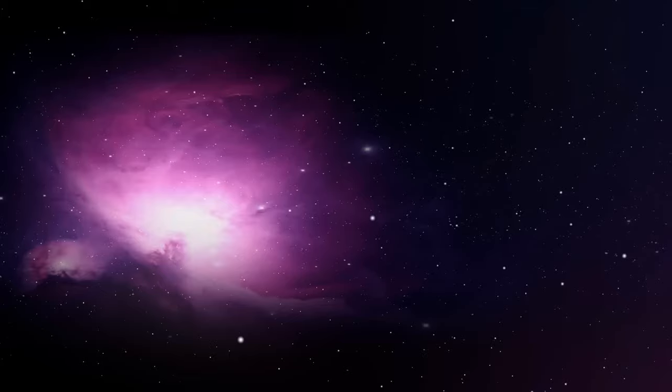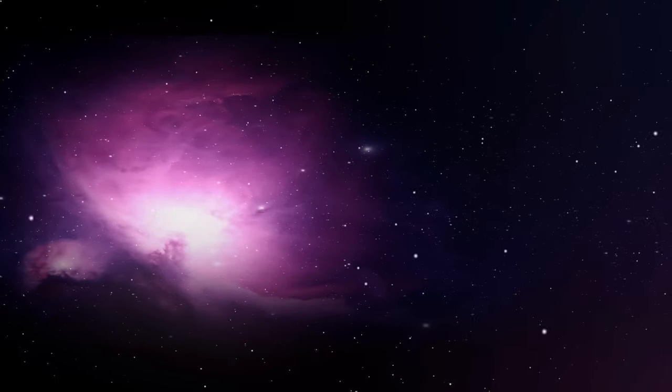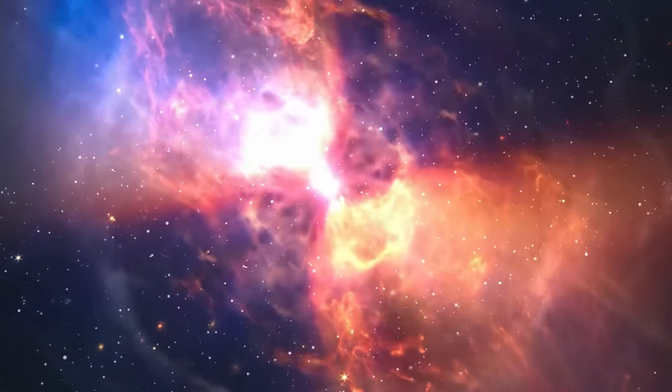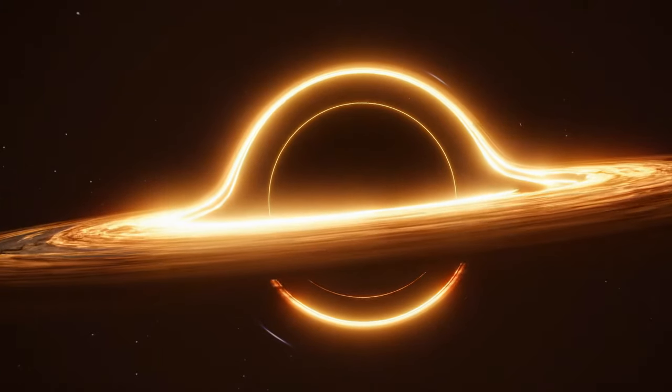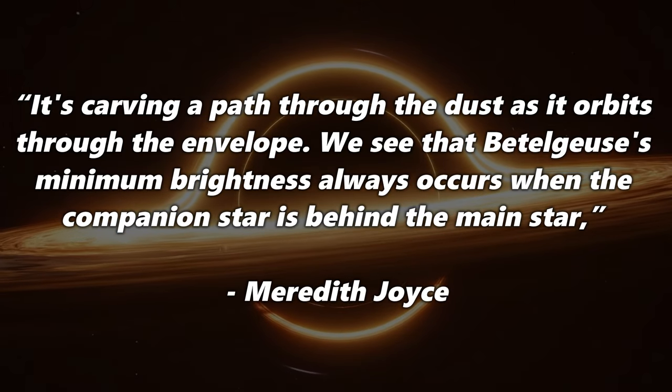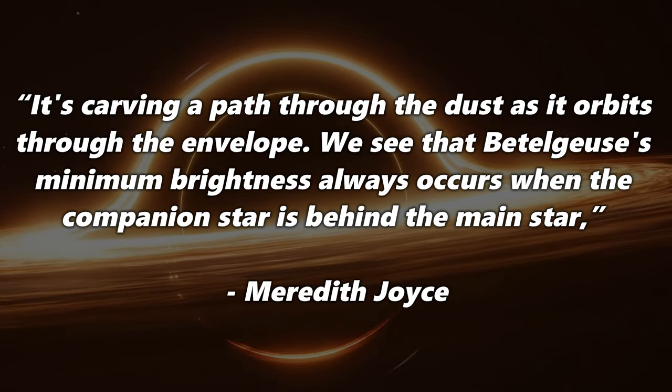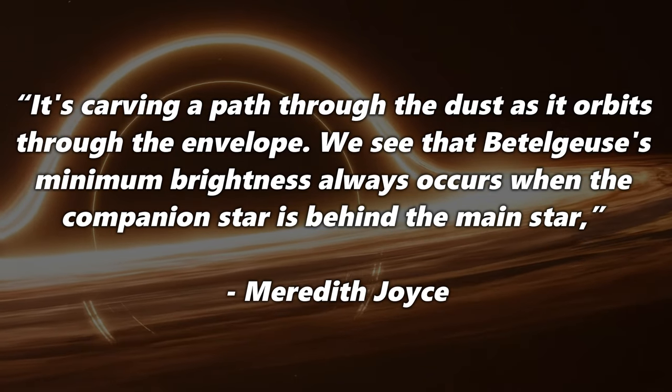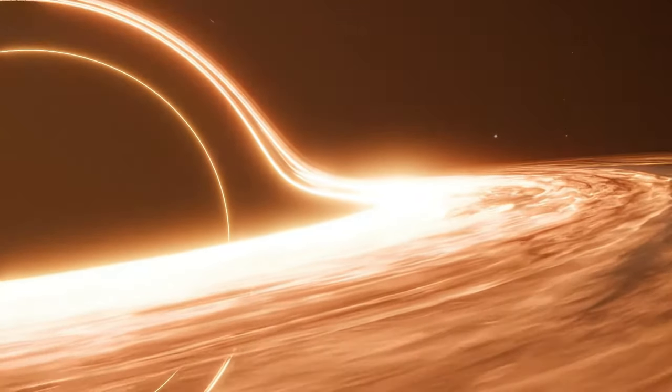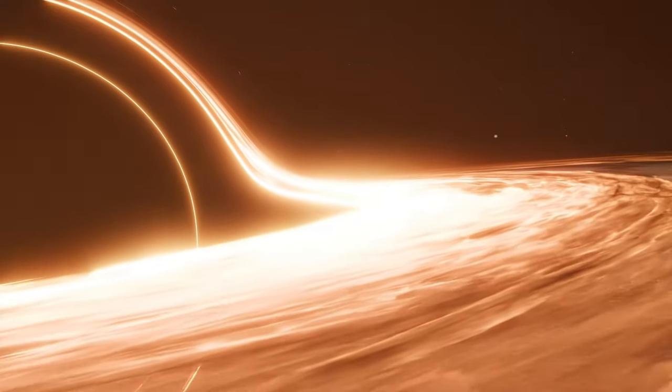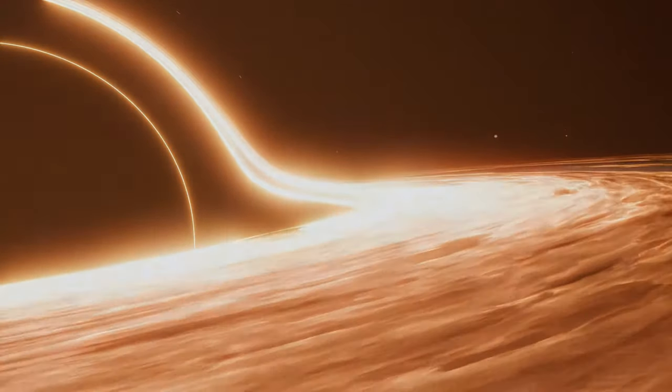But that's not all. The way brightness fluctuations are related to changes in speed tells us even more about this cosmic duo. The companion star seems to have a very interesting interaction with the material around Betelgeuse. We know that Betelgeuse is surrounded by an extended dust shell. And this newly discovered companion star seems to be stirring up the dust shell. It's carving a path through the dust as it orbits through the envelope. We see that Betelgeuse's minimum brightness always occurs when the companion star is behind the main star, explains Meredith Joyce, a co-author of the study. This fits perfectly with our model that the companion star interacts with the dust around Betelgeuse. The team was even able to calculate that the companion star moves around Betelgeuse at a distance of about 1850 solar radii, a distance that perfectly matches these observed fluctuations.